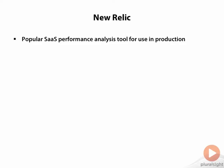New Relic is a SaaS tool that takes runtime metrics both on the server side and the client side in your Rails app and makes them available to you in an online dashboard. It has a free plan but you'll get more out of it with the paid plans. New Relic is designed specifically to help you identify performance bottlenecks in your application when running in production, not just in development.